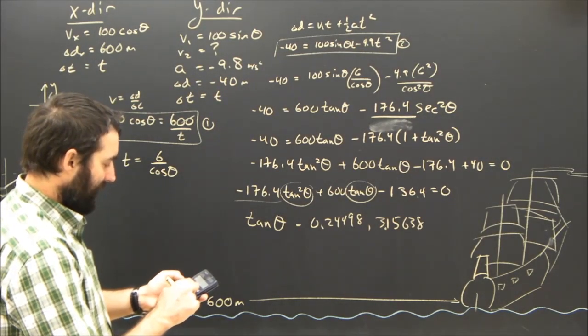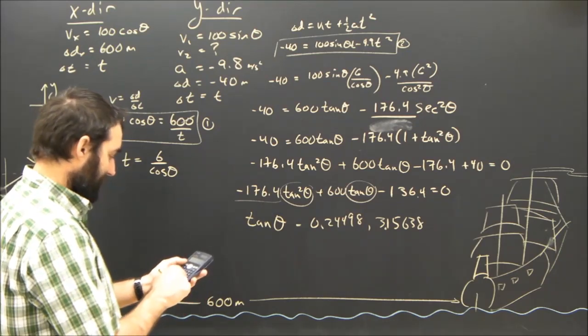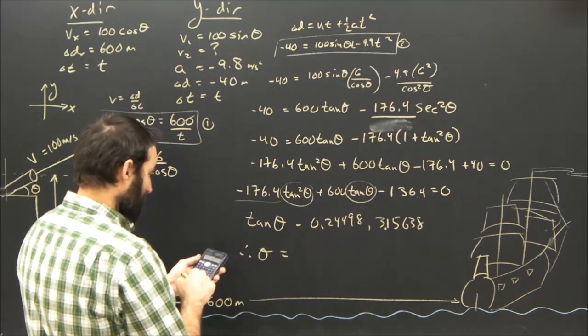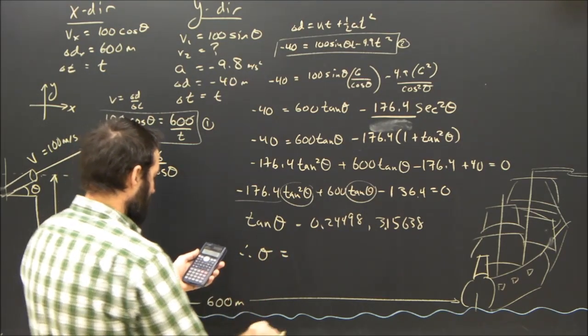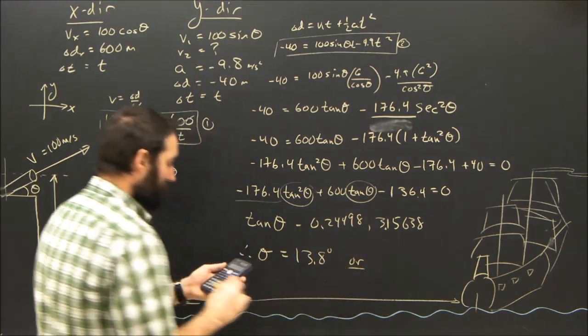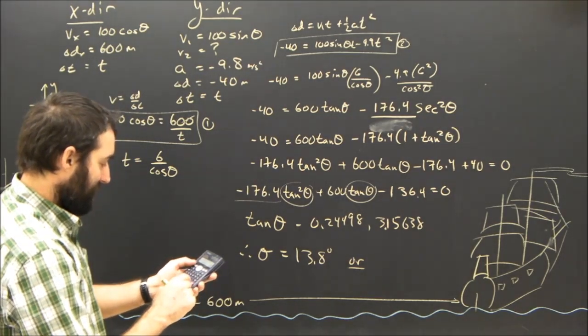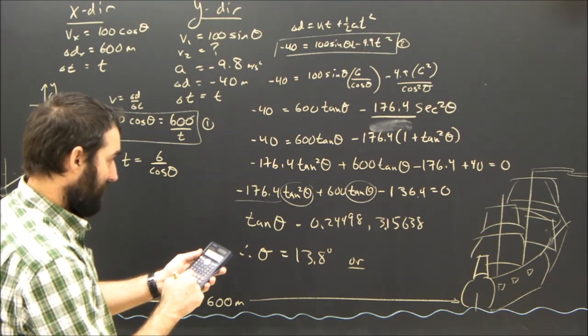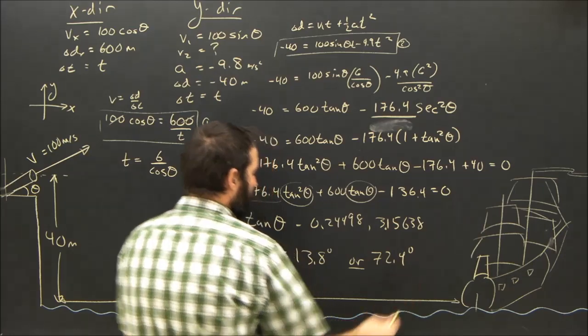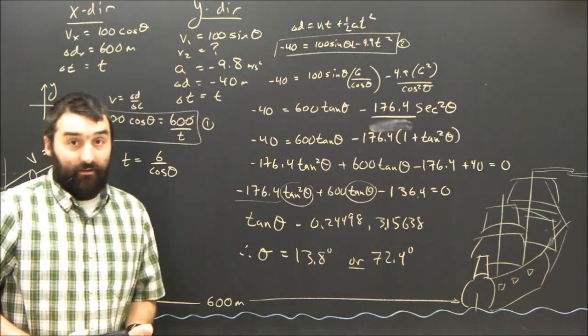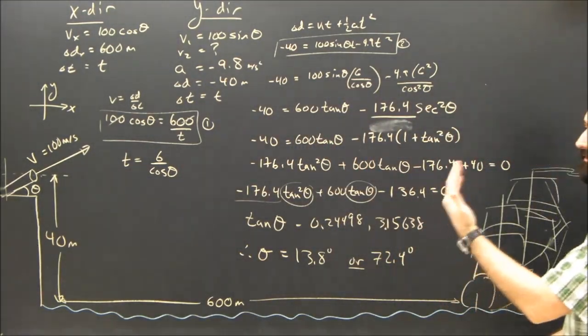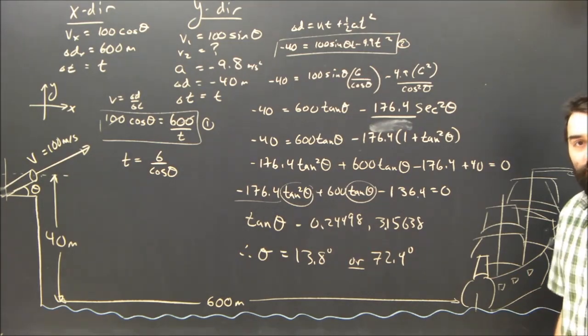Which, of course, means that I can go back to normal mode of my calculator. And I can say the tan inverse. So theta must be either equal to the tan inverse of that 0.24498, which is 13.8 degrees, or it must be the tan inverse of 3.15638, which is 72.4 degrees. Now, it's not surprising that there are two answers, because we had a quadratic equation. But physically, does it make sense that there are two different angles with which they can hit the ship? And I hope it does.